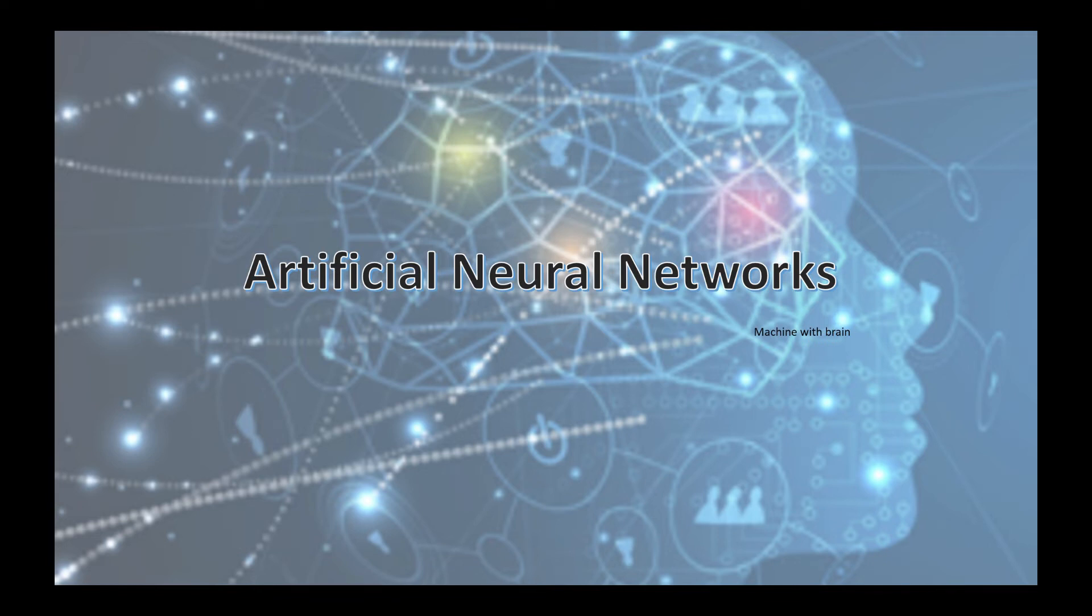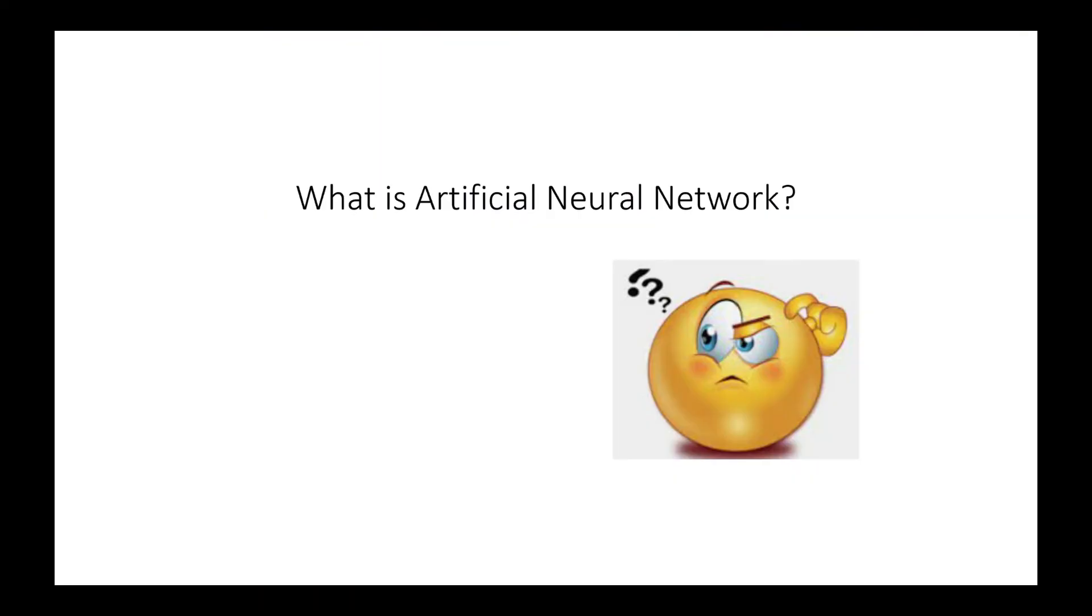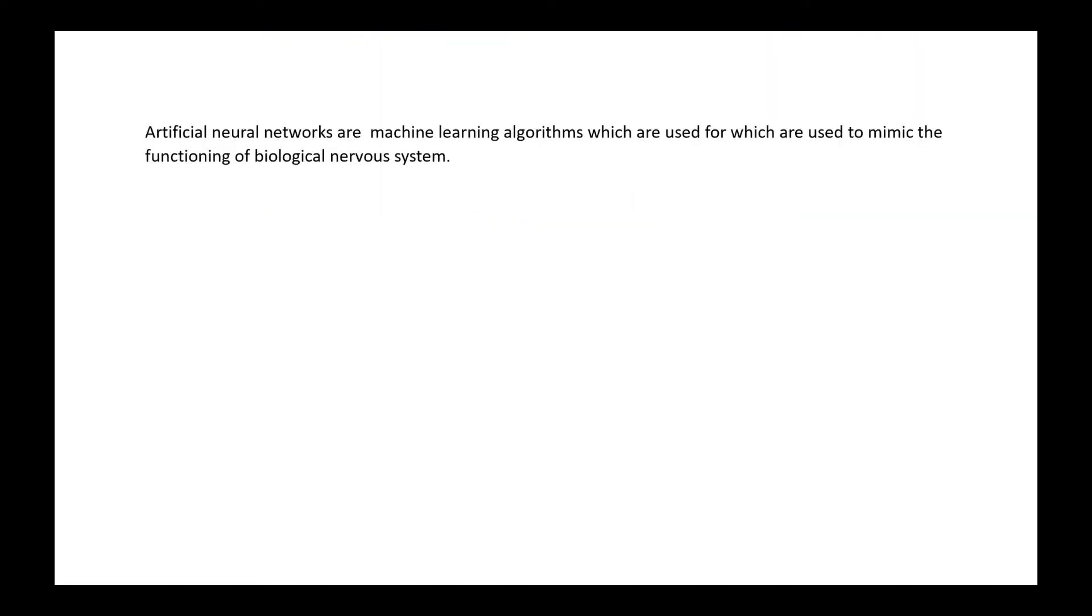Hello everyone, in this video I will be giving a brief introduction about artificial neural networks for a person who has not known about it at all. So let's start: what is artificial neural network? Generally, artificial neural network is a machine learning algorithm used for mimicking the functioning of biological nervous systems.